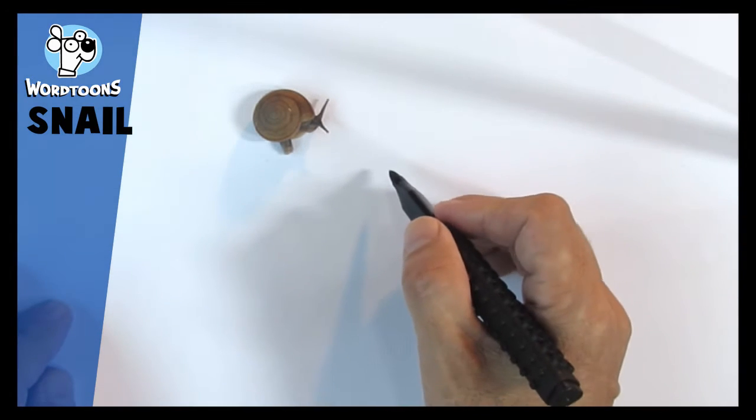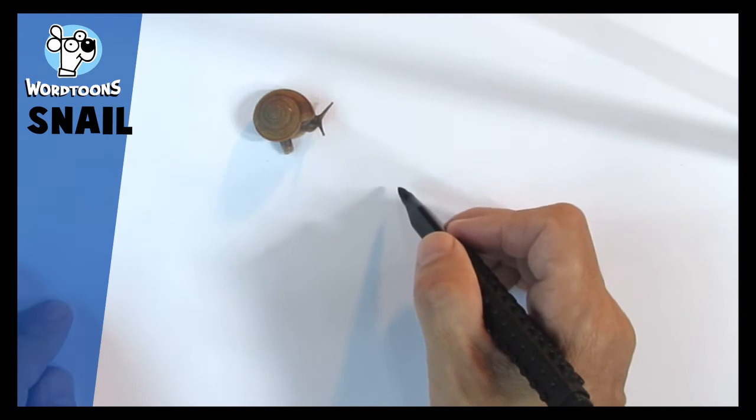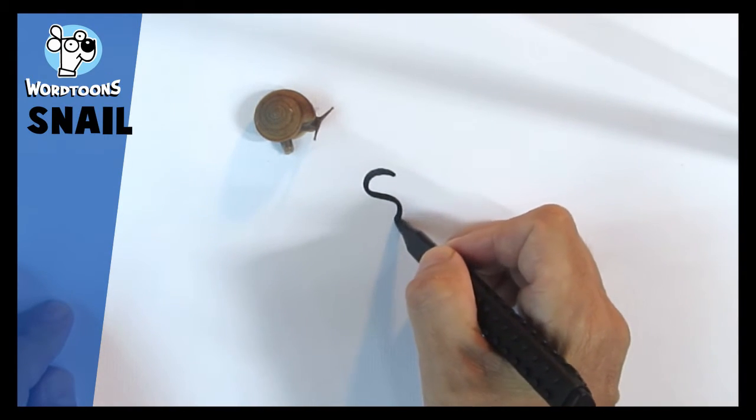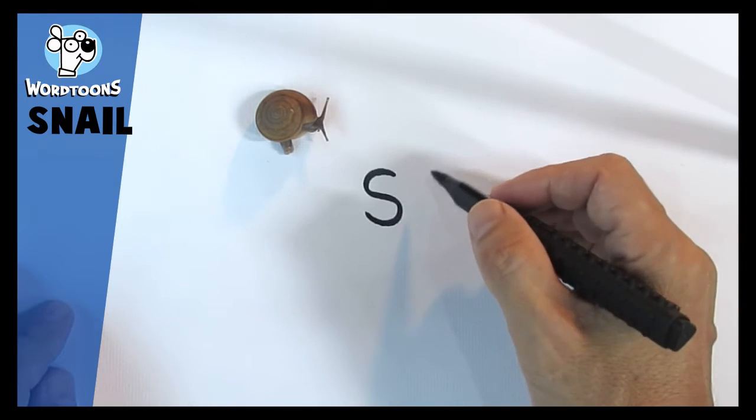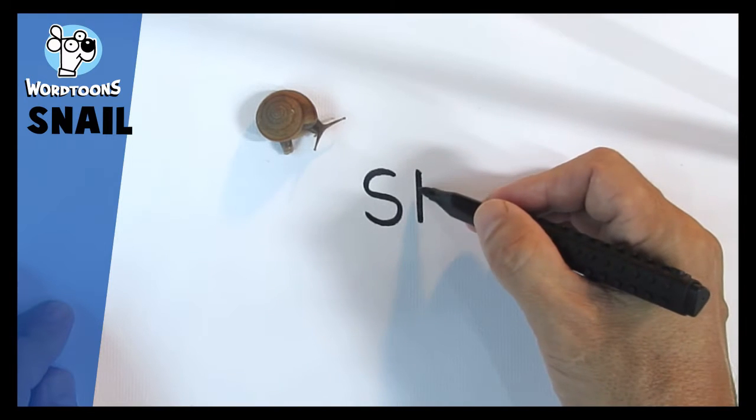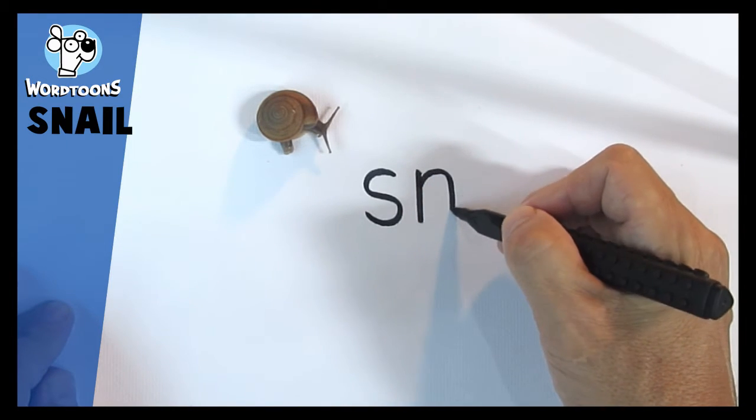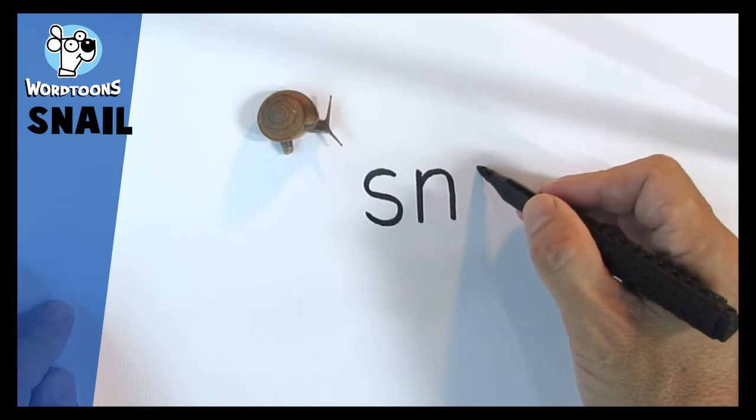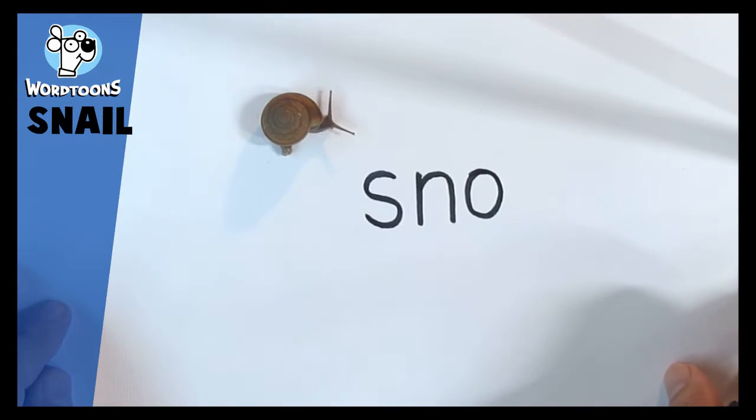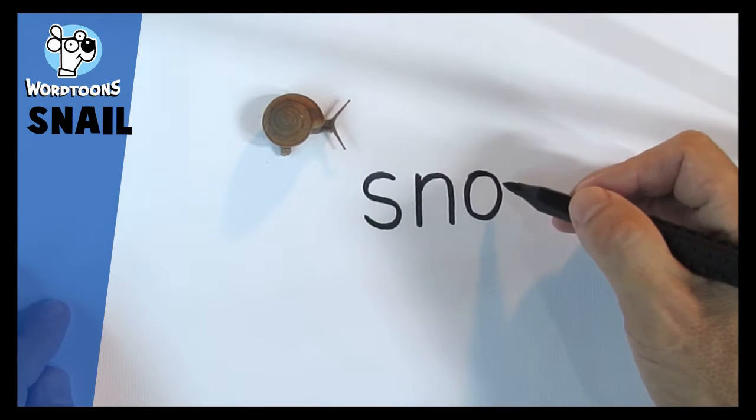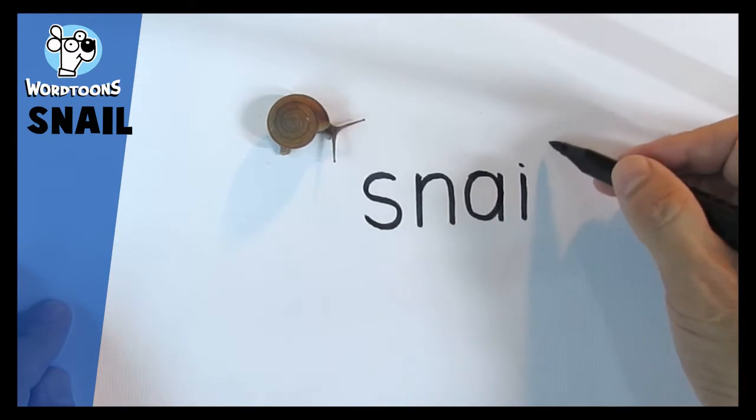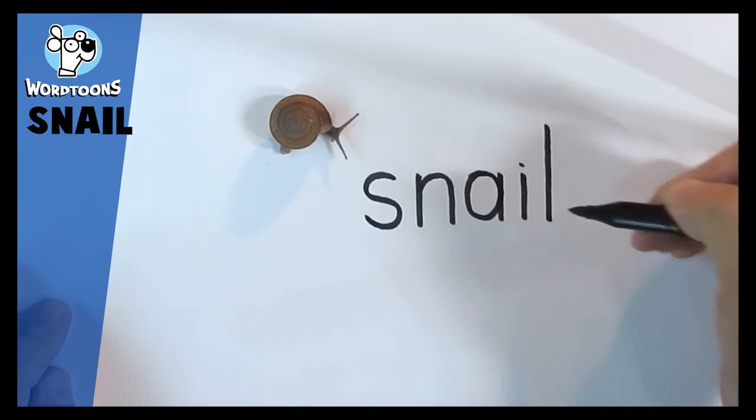Alright, let's draw it kind of right near him. Let's write the word. See if we can get it finished before he leaves the page. Well, we know he's not kind of that fast. There we go. Making the letters just nice and neat. I and L. There we go.